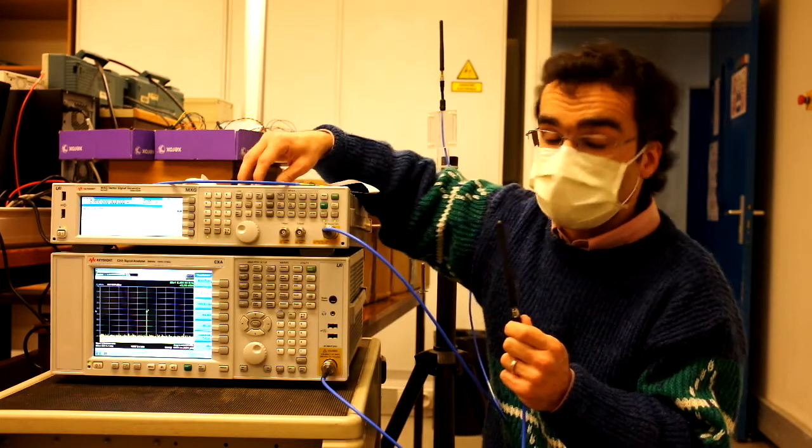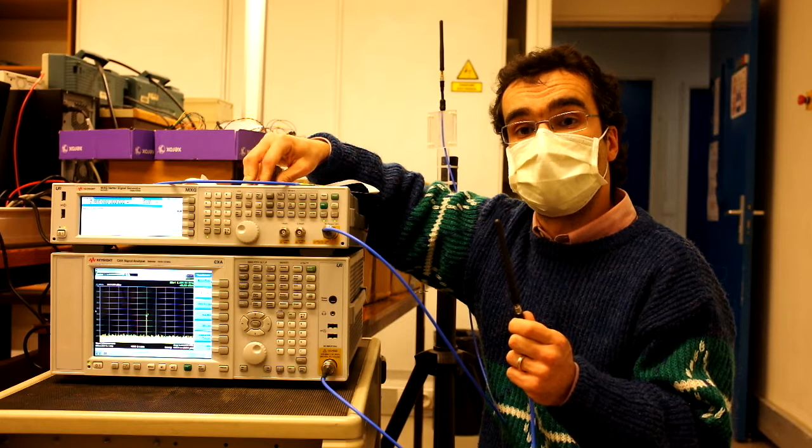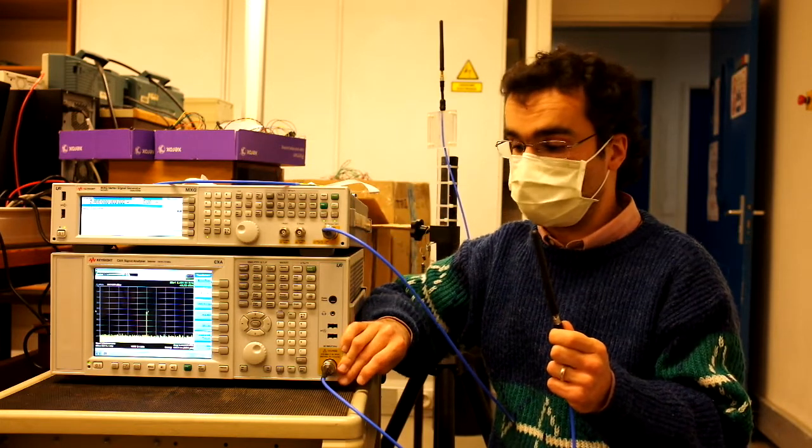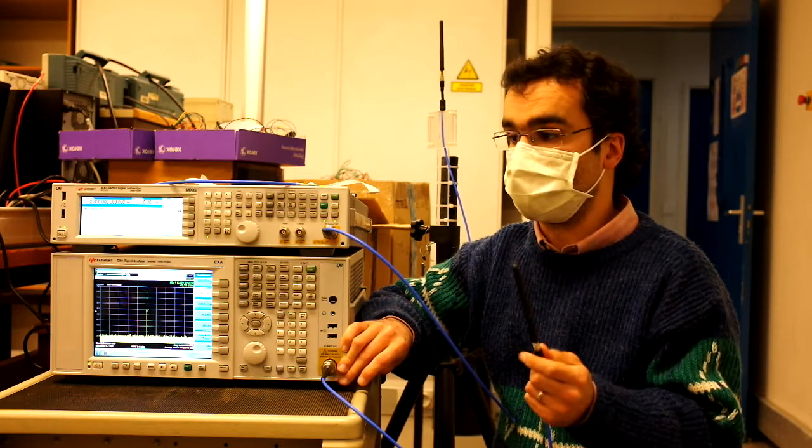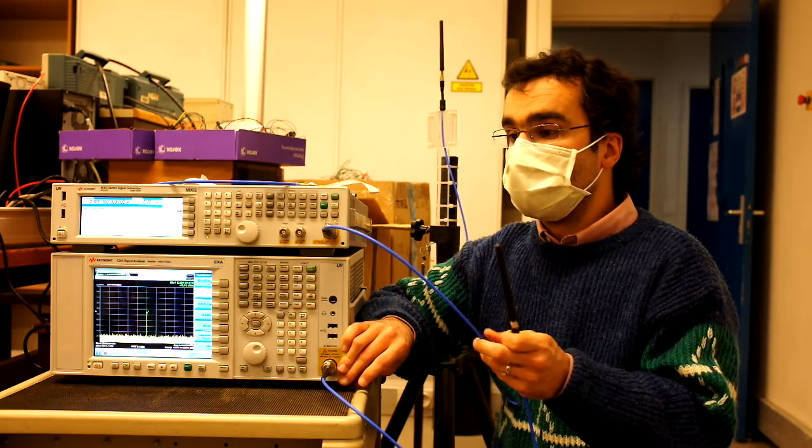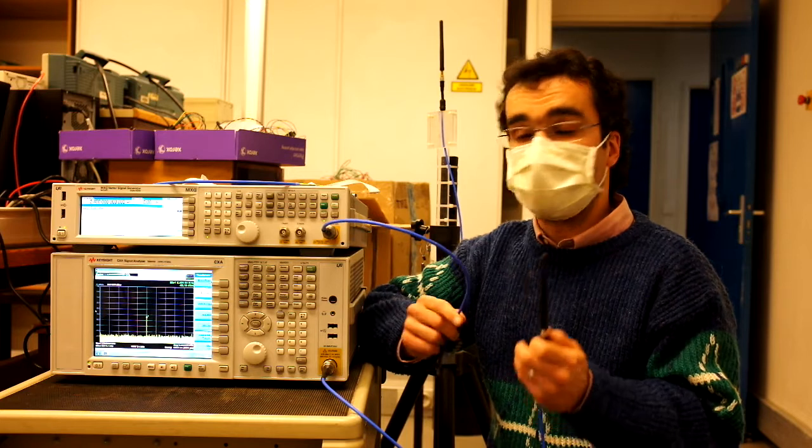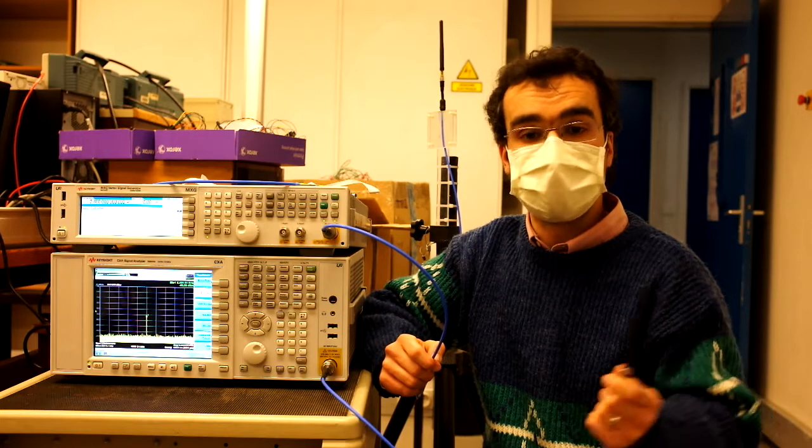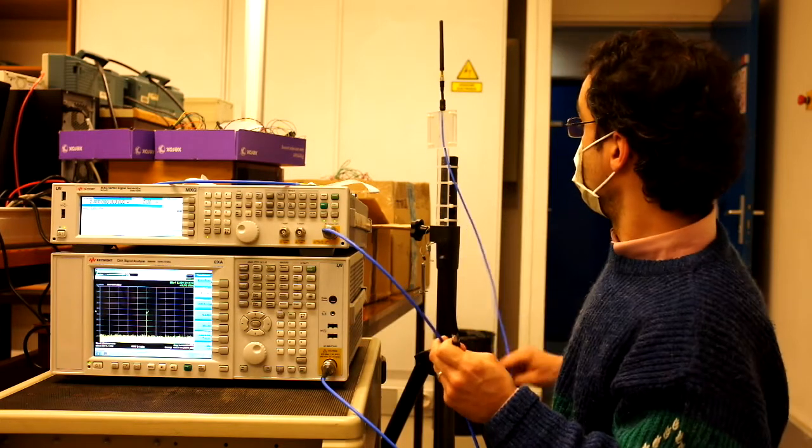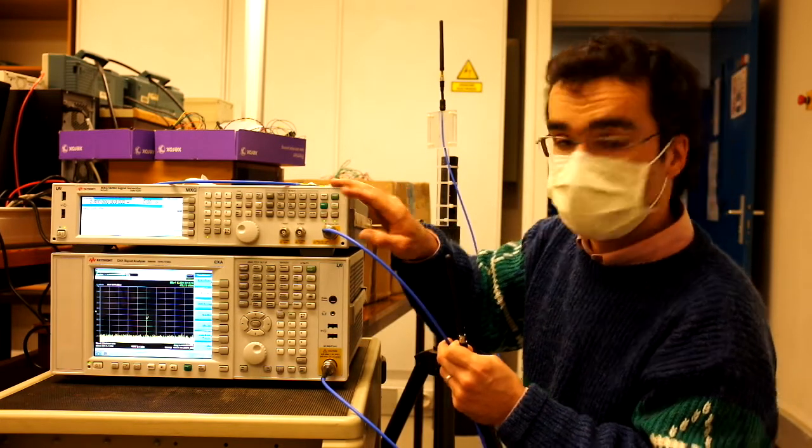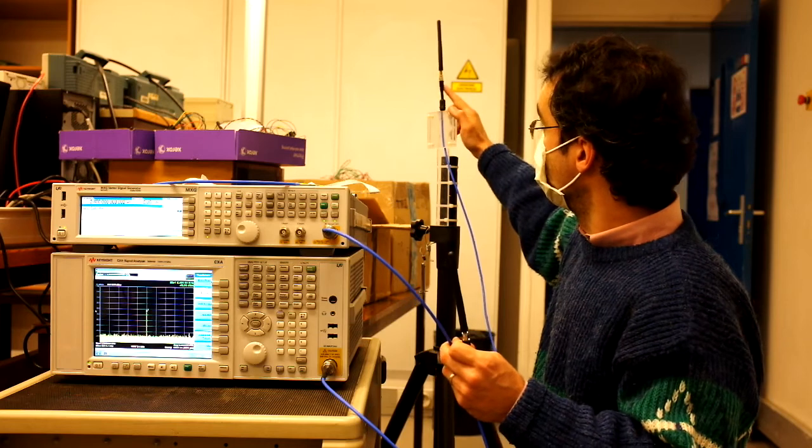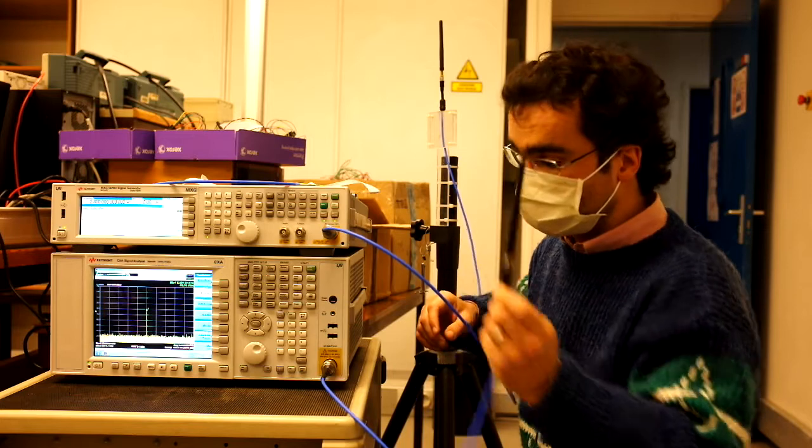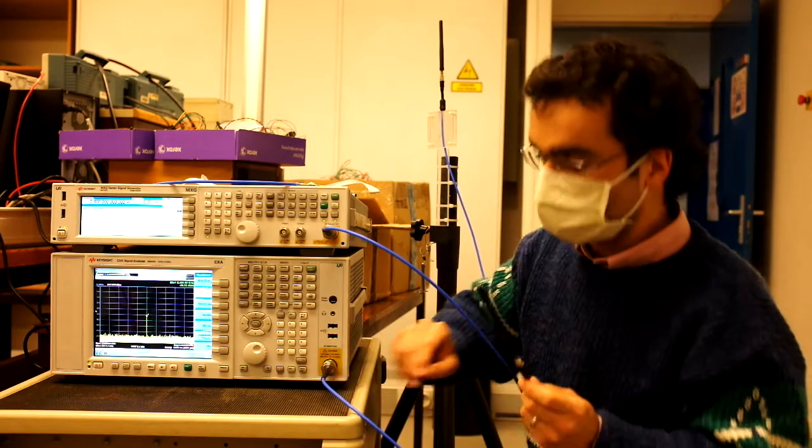So I am using this RF generator with a power of 0 dBm. And as a receiver I will use this spectrum analyzer tuned also to 2.4 GHz. These cables have some attenuation at 2.4 GHz. I am going to use these cables to connect the generator to the transmitting antenna and the other cable to connect the receiving antenna to the spectrum analyzer.